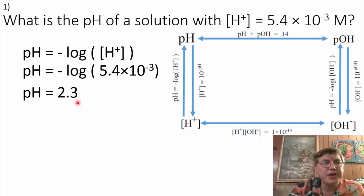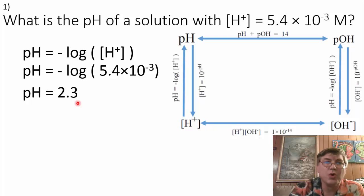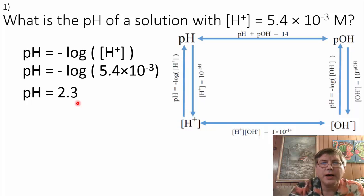Remember that pH values are exponential — every pH unit from 1 to 2, or 2 to 3, is 10 times or one-tenth depending on direction of the number just before it.